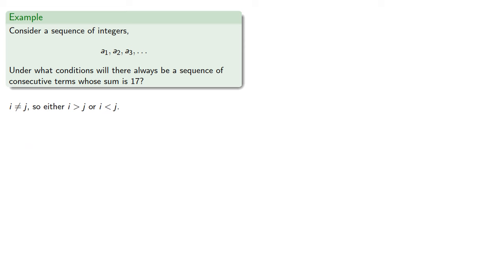i can't equal j, so either i is greater than j or less than j. But if i is less than j, then si, which is the sum of the terms up to the ai terms, has fewer terms than sj, which will be the sum up to the i term and then onward to the j term.